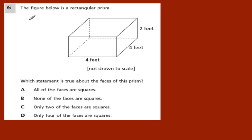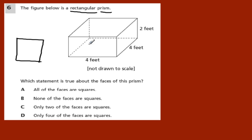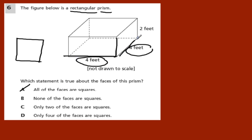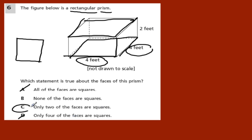A lot of questions on the state test are like this. They'll give you a rectangular prism — don't be intimidated by that word, it essentially means a box. The faces are rectangles. They ask which statement is true about the faces of this prism. 'All the faces are squares' is out — a square has all edges exactly equal, but the front face here is 4 by 2, so that's a rectangle. 'None of the faces are squares' is also false because two dimensions are equal: it's 4 by 4, so the top and bottom are squares. The answer is C: only two of the faces are squares.